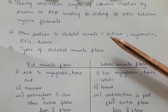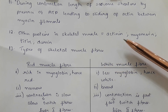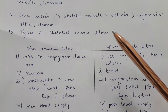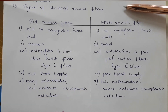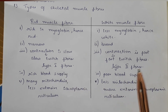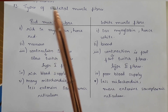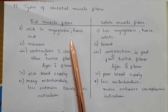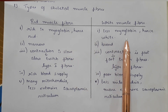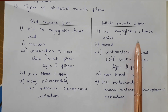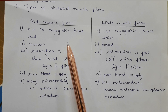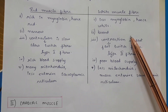Other proteins in the skeletal muscle are actinine, myosin, titin, and desmin. There are two types of skeletal muscle fibers: red muscle fiber and white muscle fiber. The red muscle fiber is rich in myoglobin, hence they are red. The white muscle fiber has less myoglobin, hence they are white.